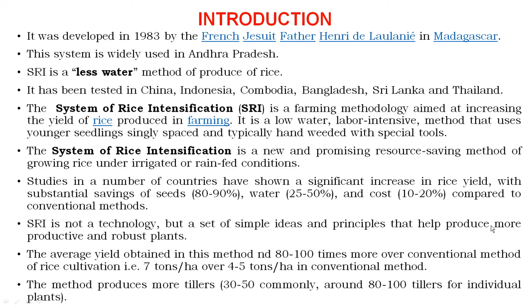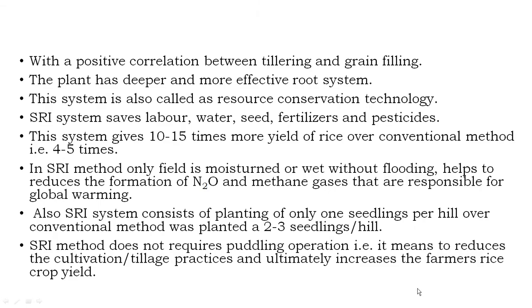Plant growth is vigorous, the number of panicles are healthy, the number of seeds per plant and number of tillers are more, and root development is better compared to conventional methods. The average yield in SRI is 80 to 100 quintals per hectare versus 4 to 5 tons per hectare in conventional. SRI produces more tillers — commonly 80 to 100 tillers per individual plant, compared to 30 to 50 tillers in conventional.